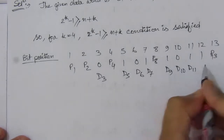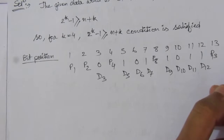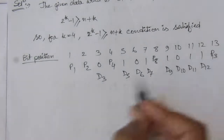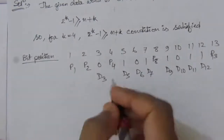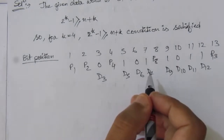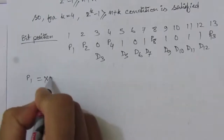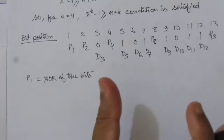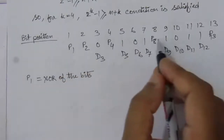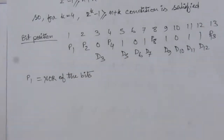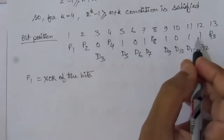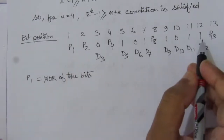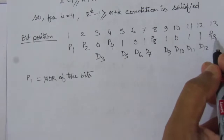To generate the 13-bit composite word that corrects single errors and detects double errors, we add an extra parity bit p13 at position 13. For finding p1, p2, p4, and p8 we follow the standard Hamming code procedure. For p13, we check the parity of all 12 bits: if there are an odd number of ones, p13 is 1; if even, p13 is 0.